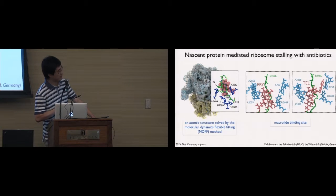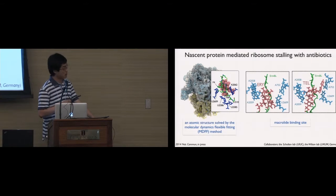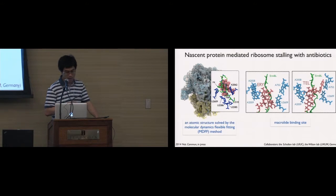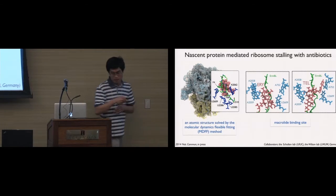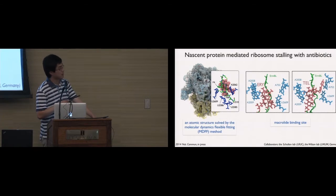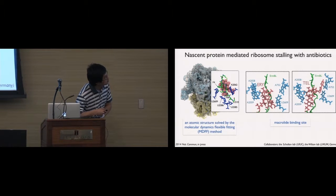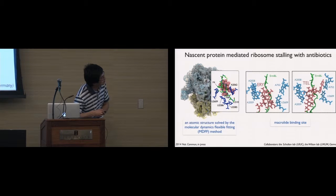Based on this atomic structure, we can see that the nascent protein interacts closely with several key nucleotides of the ribosome. We also replaced the erythromycin drug with telithromycin drug, and we equilibrated the system to get the equilibrated structure of the telithromycin-bound ribosome complex. We can see that because telithromycin has this extra ring here that stacks with two nucleotides of the ribosome.